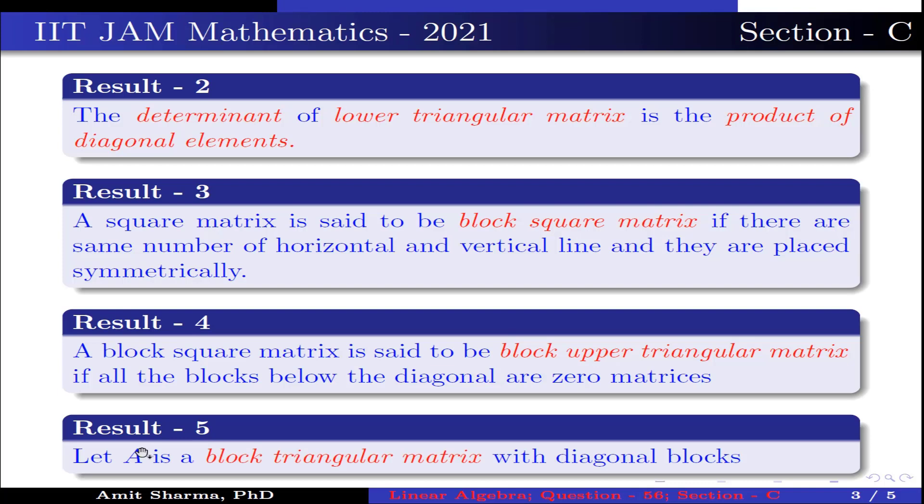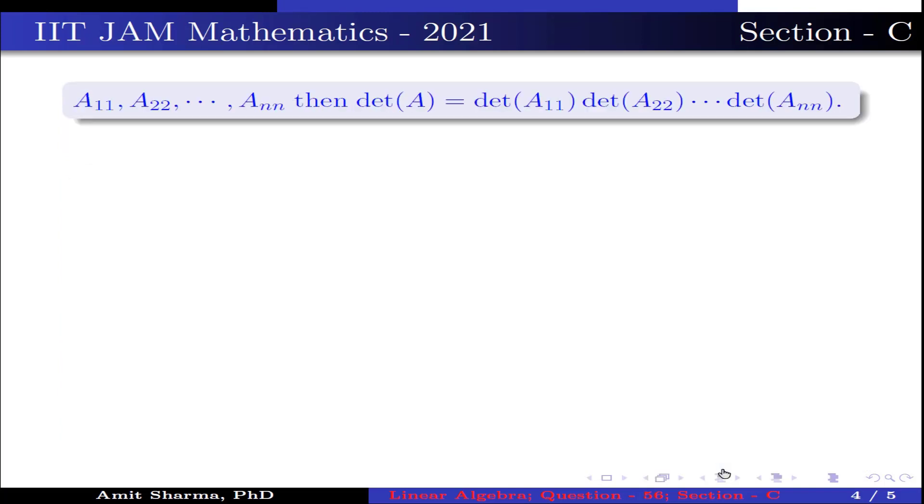Result number 5: Let A be a block triangular matrix with diagonal blocks A11, A22 up to Ann, then determinant of A is equal to determinant of A11, determinant of A22, up to determinant of Ann.